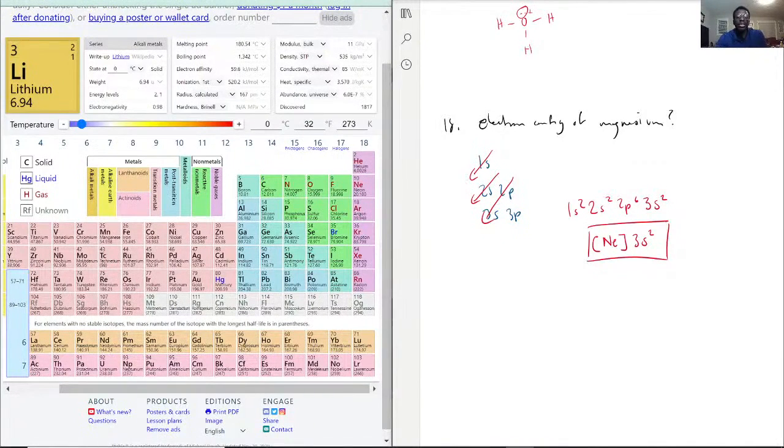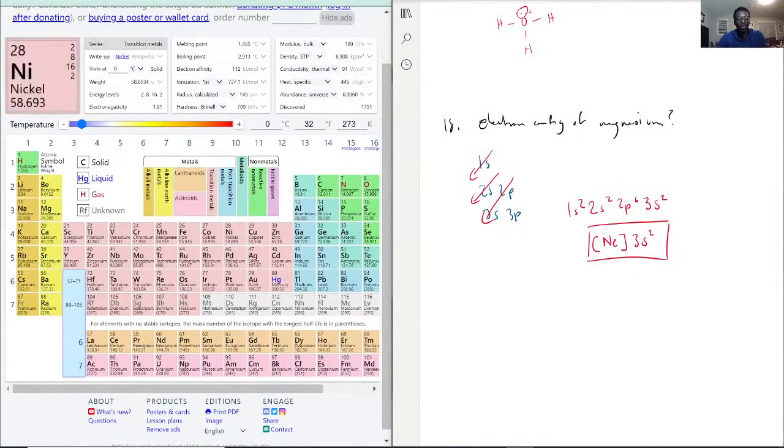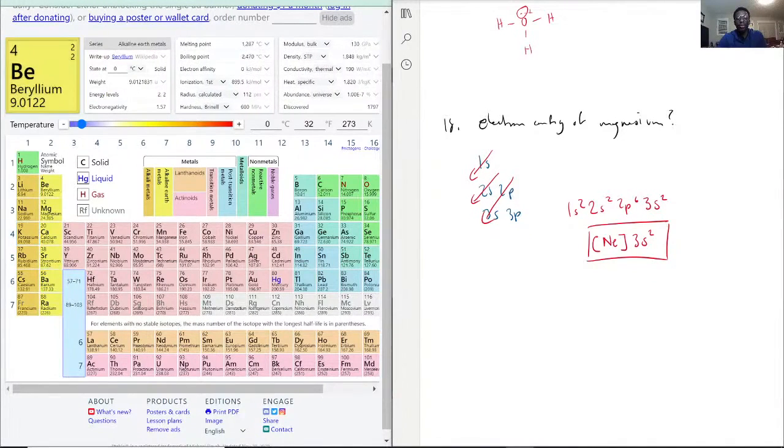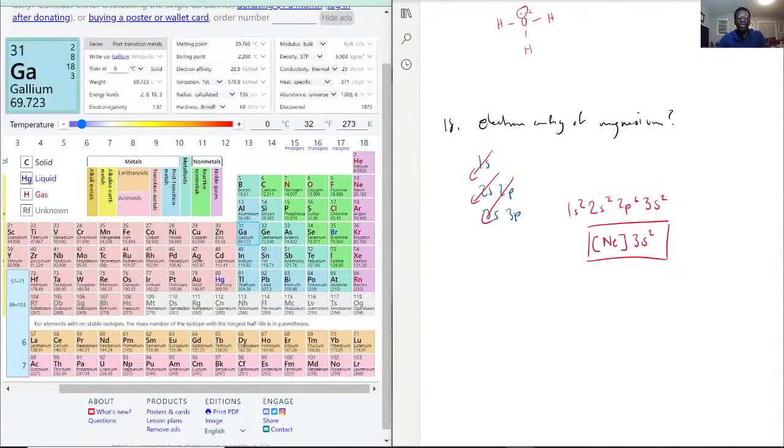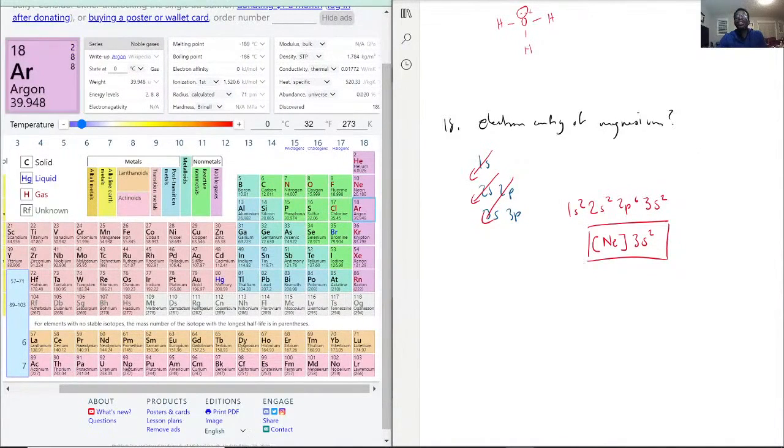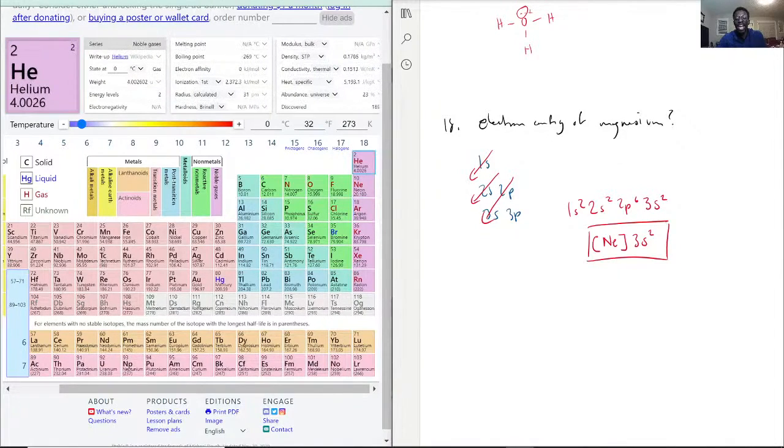The reason being is because our s subshell, as you recall, would be the first two columns. Our p subshell would be columns 13 through 18, except for helium. Helium counts as an s orbital.